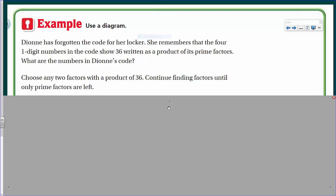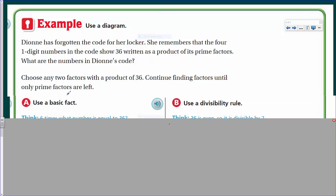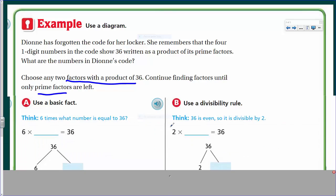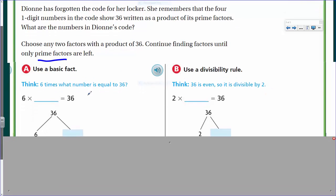It says, Dionne, I think that's her name, has forgotten the code for her locker. How unfortunate. She remembers that the four one-digit numbers in the code shows 36 written as a product of its prime factors. Okay, that's odd that she would remember that. But, okay. One of the numbers in Dionne's code. I'm trying. I don't think I've seen it spelled that way before. Anyways, choose any two factors with a product of 36. Continue finding factors until only prime factors are left. So, we're going to find two factors of 36. Continue finding factors until they're all prime. Oh, okay. This sounds like the factor tree. Yes, I do believe this is the factor tree. Look it. It's a tree.